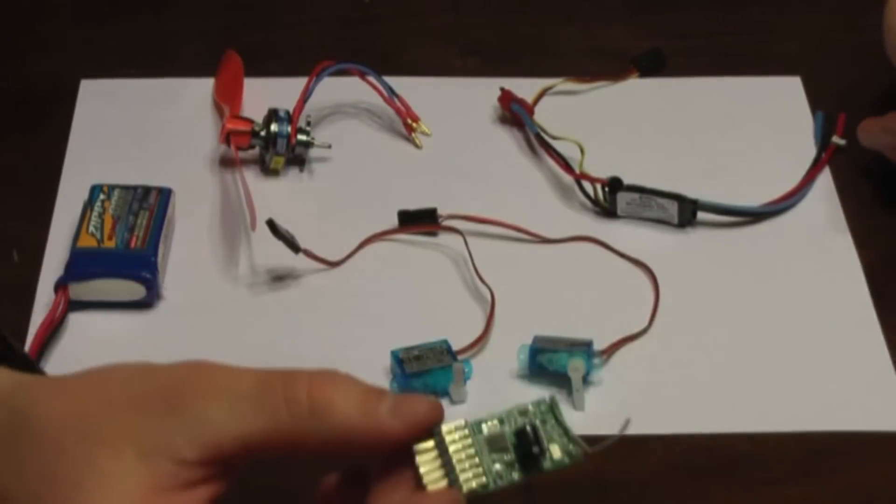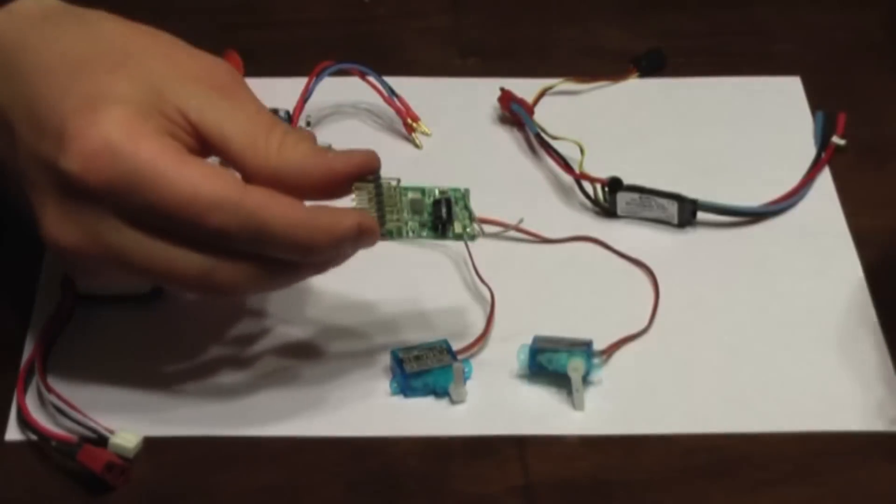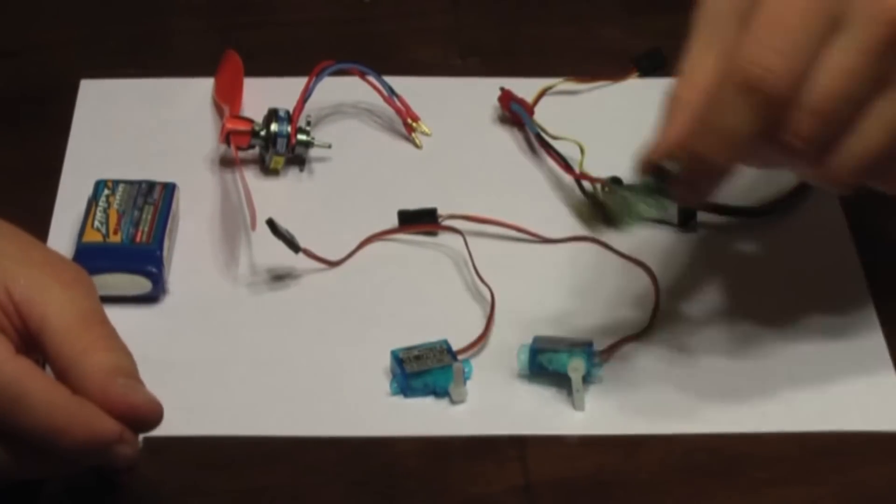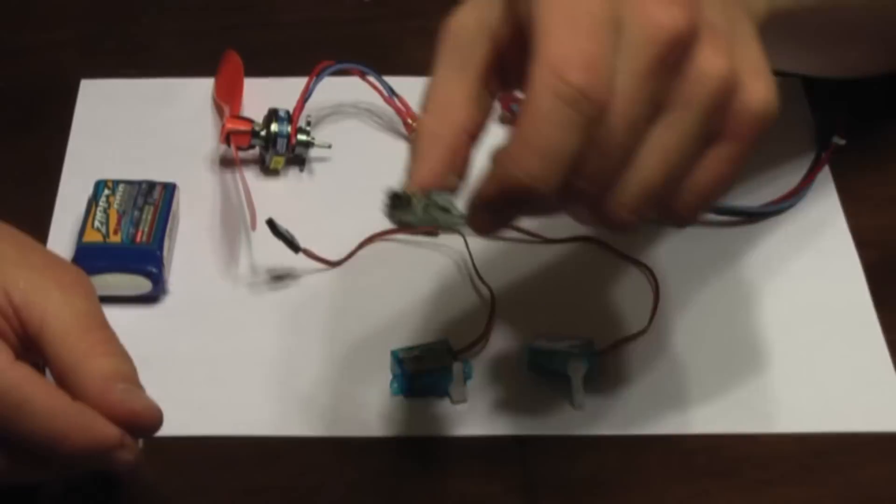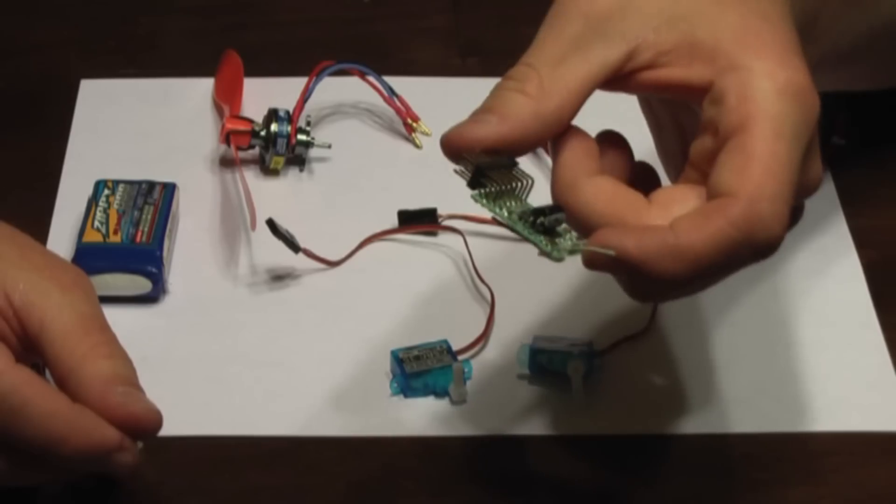Next we've got the receiver. Normally receivers will have some sort of casing on them. I took the casing off of this one, or maybe it fell off. But this is what's going to receive the signals from the transmitter and relay them on to the rest of your components.